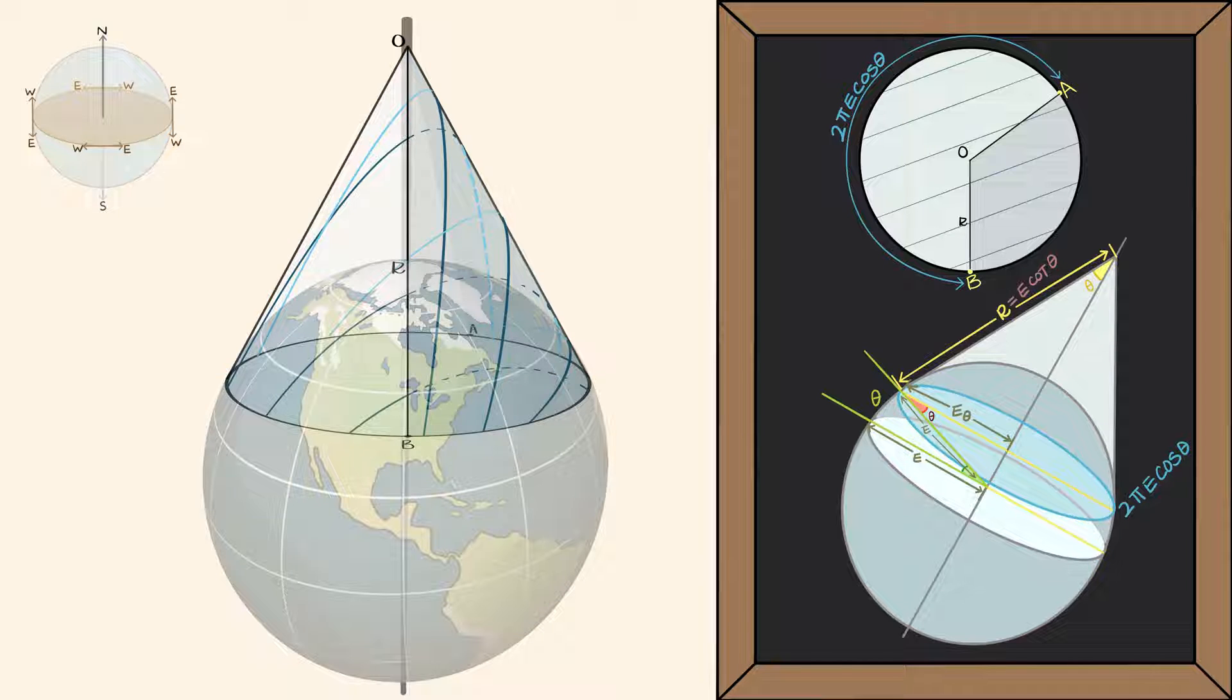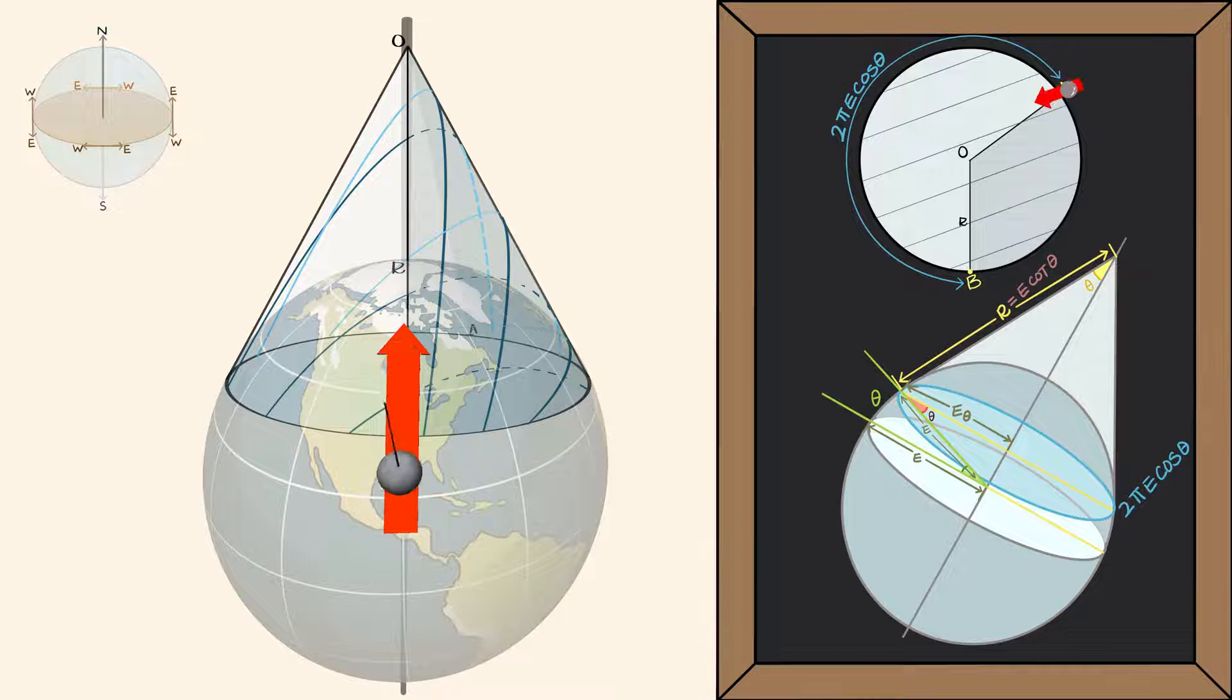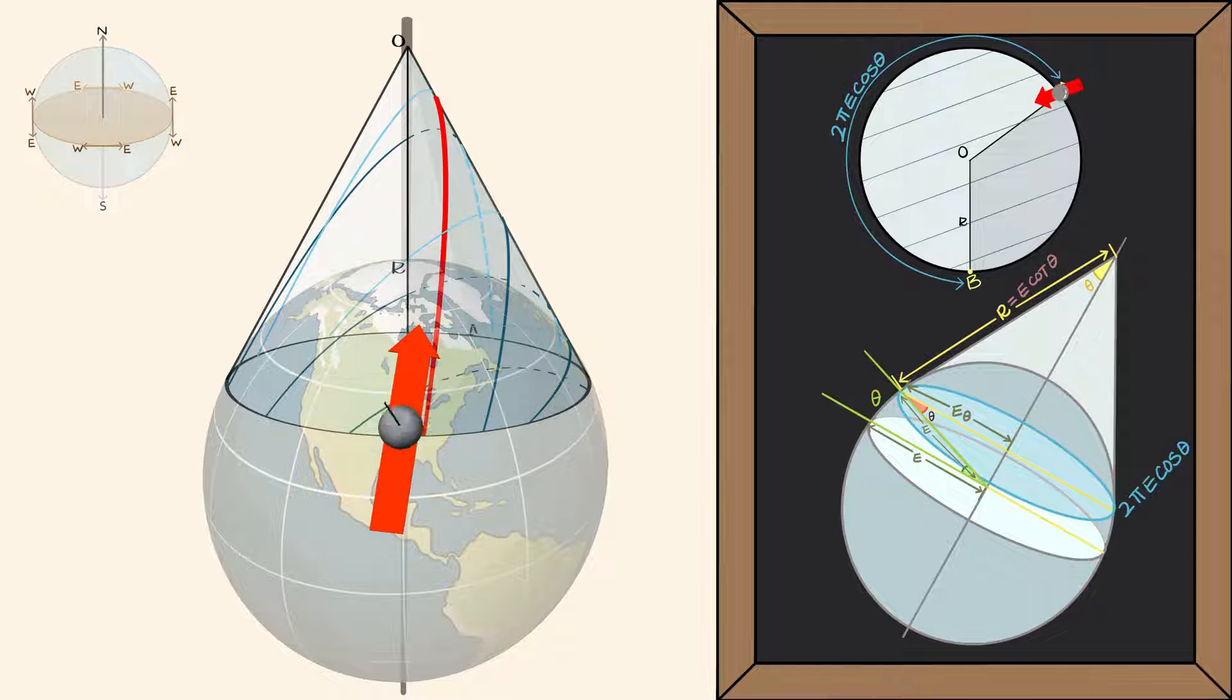Next, place the pendulum right where the cone meets Earth. And don't forget to align the pendulum with the parallel lines we drew on the cone. As Earth rotates, our pendulum is flung around Earth's axis.